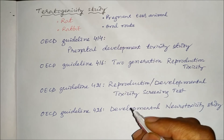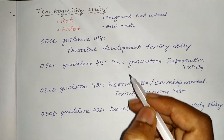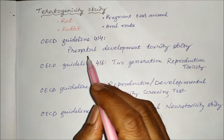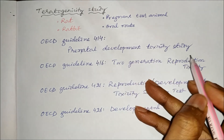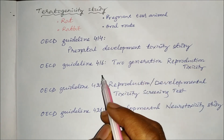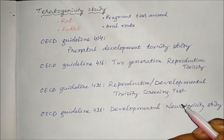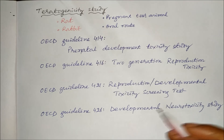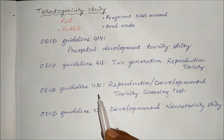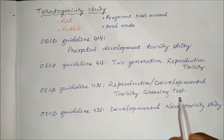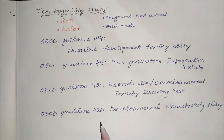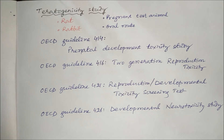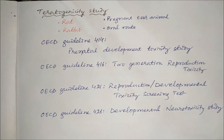OECD guideline 414 is the prenatal development toxicity study. OECD guideline 416 is the two-generation reproduction toxicity study. OECD guideline 421 is the reproduction or developmental toxicity screening test. OECD guideline 426 is the developmental neurotoxicity study. This is all about teratogenesis. Thank you.